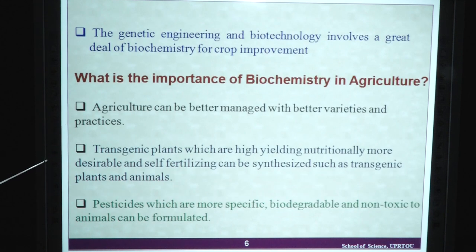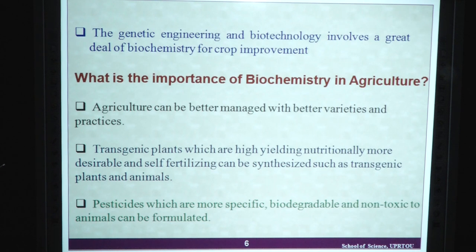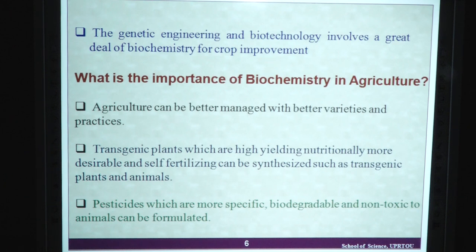Genetic engineering and biotechnology are the most important powerful tools, which involve a great deal of biochemistry for crop improvement such as transgenic crops as well as transgenic animals. In agriculture, it can be better managed with better varieties and practices to improve the variety of plants and animals. Nowadays we have different hybrid vegetables, fruits and other transgenic animals. Transgenic plants which are highly yielding, nutritionally more desirable and self-fertilizing can be synthesized. Pesticides which are more specific, biodegradable and non-toxic to animals can also be formulated.